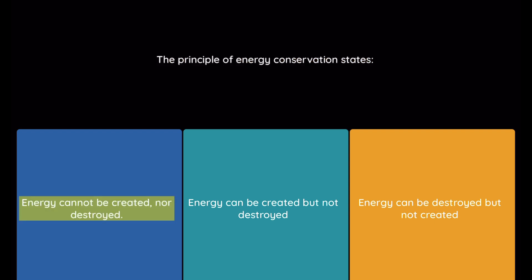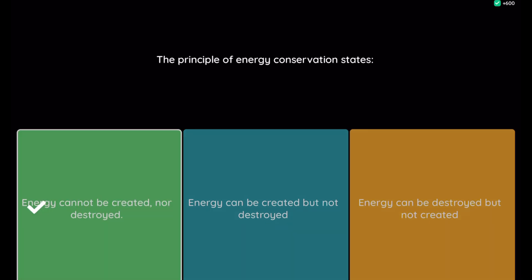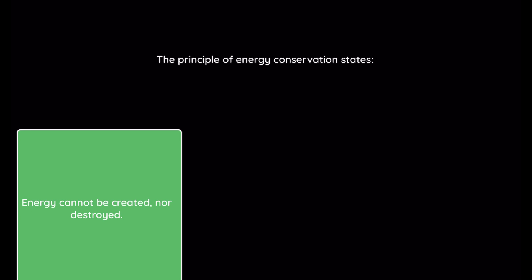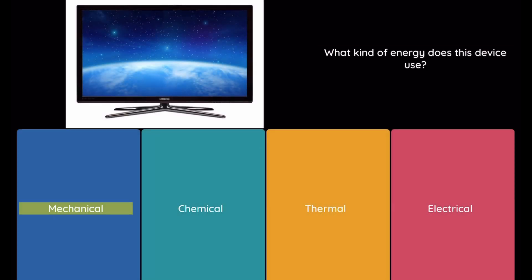Question: The principle of energy conservation states. Option 1: energy cannot be created nor destroyed. Option 2: energy can be created but not destroyed. Option 3: energy can be destroyed but not created. Question: What kind of energy does this device use? Option 1: mechanical. Option 2: chemical.